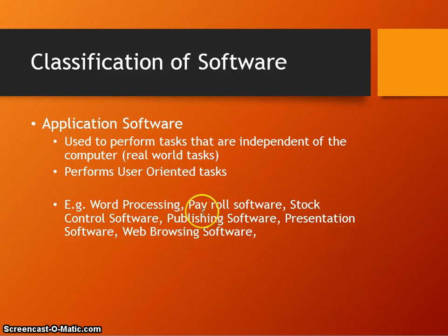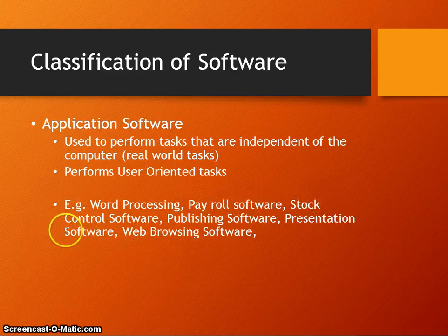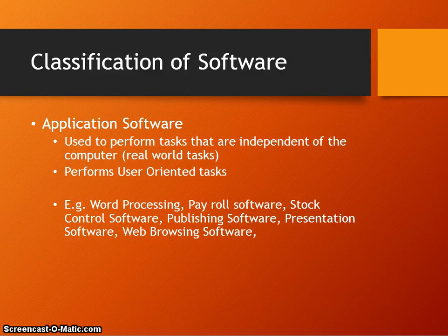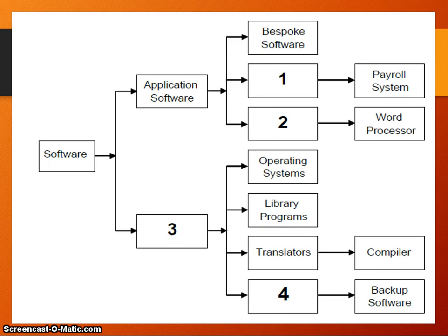We also have special purpose software, such as payroll, web browsing, and stock control — used for one particular task. For the diagram activity, number one was special purpose software, number two was general purpose, number three was system software, and number four was utility software.